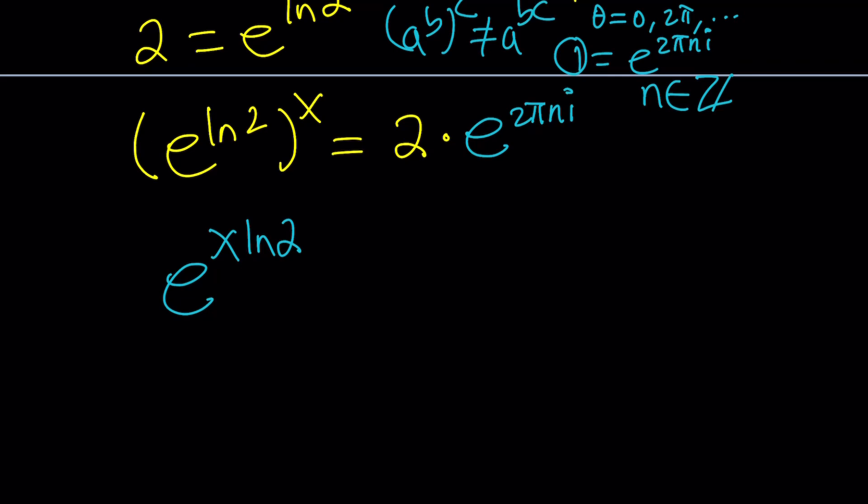Especially if c is an integer and the base is positive, it's going to work. But there are some restrictions. Anyways, so from here, we get e to the power x ln2 equals 2 times e to the power 2 pi n i. And guess what we're going to do next?